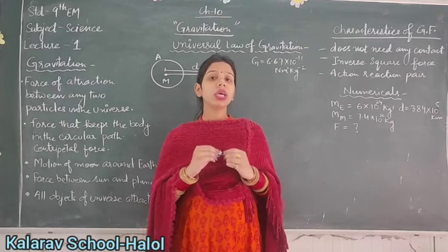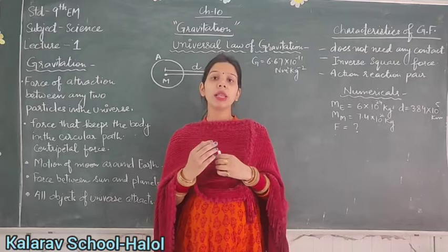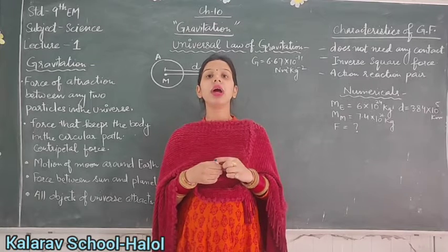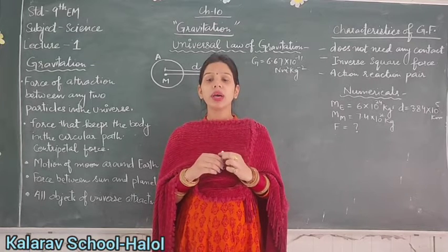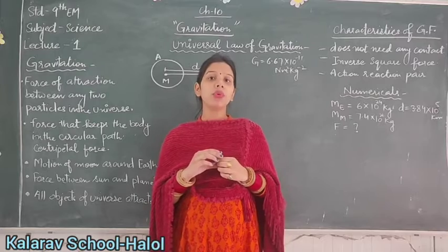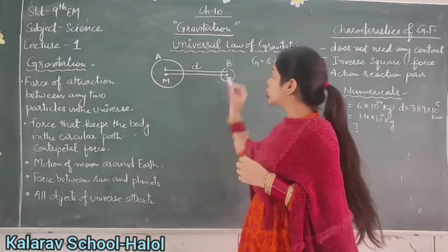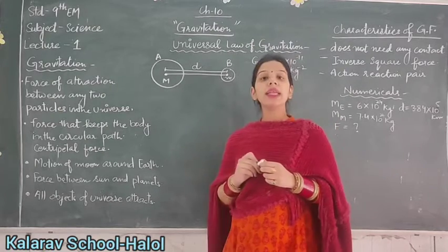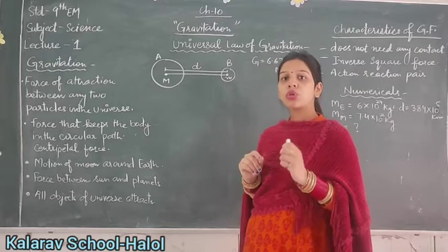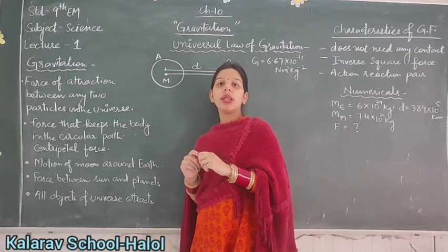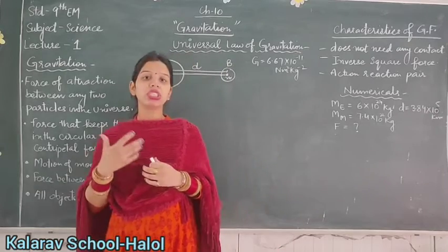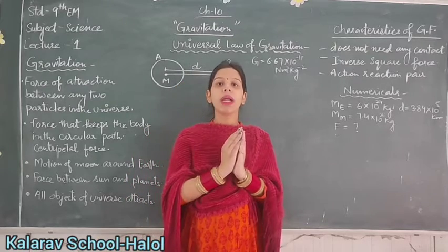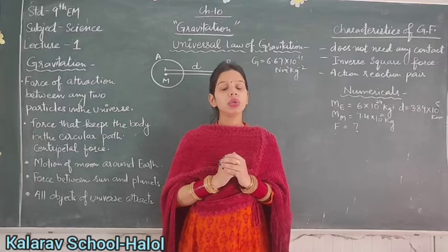The question arises: what is the force which helps the planets to revolve around the sun? Here we will discuss chapter 10, that is gravitation. Gravitation is just a force of attraction between any two particles in the universe. We simply call it gravitation or gravitational force — the attraction between two particles or two objects of the universe.